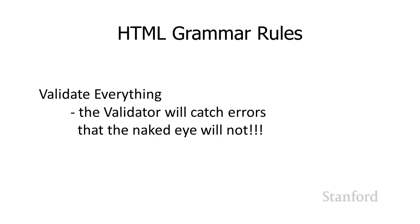This may seem like a lot of grammar to remember. Here's the bottom line: validate everything. Run your code through the validator — it will tell you if there's something wrong, whether that's angle quotes instead of straight quotes or an HTML element used illegally according to HTML5 rules. Definitely validate everything. Next lecture, we'll take a look at cascading style sheets, which will let us spice up our web pages with all sorts of fun formatting.